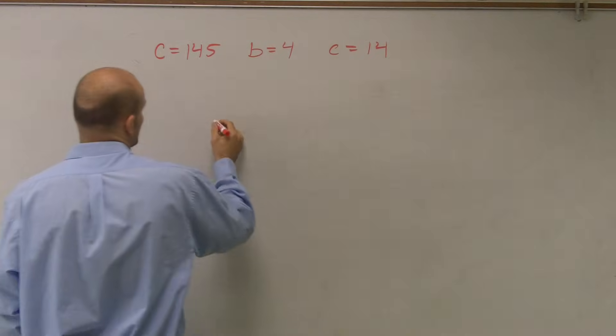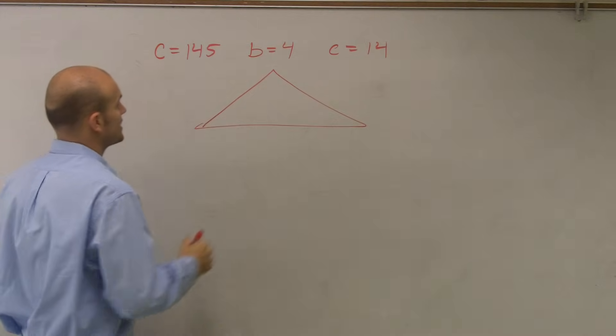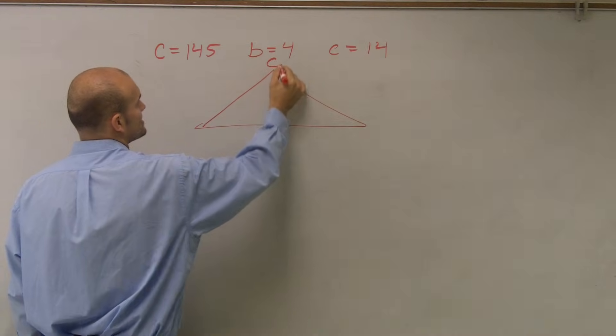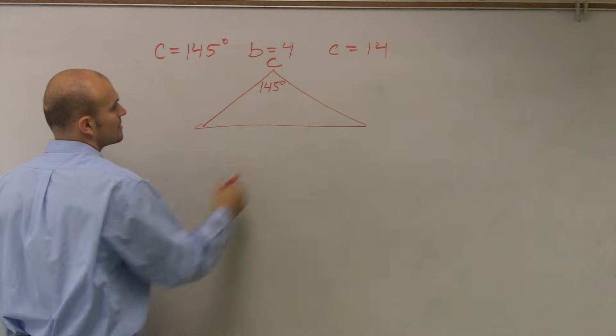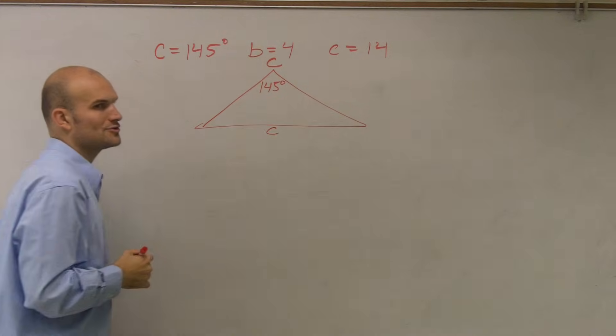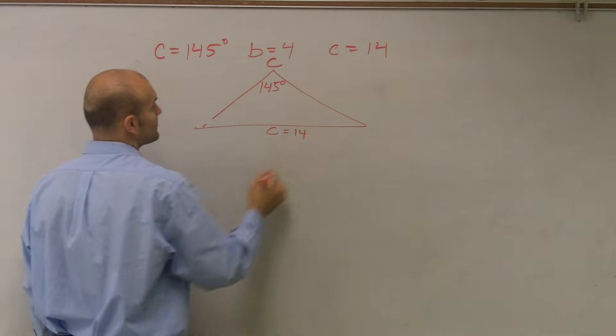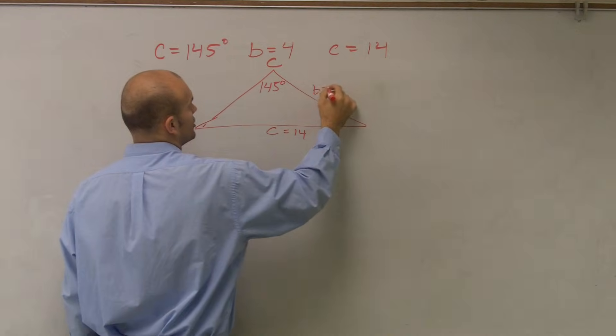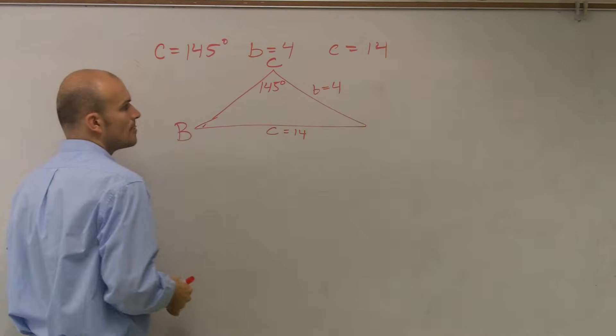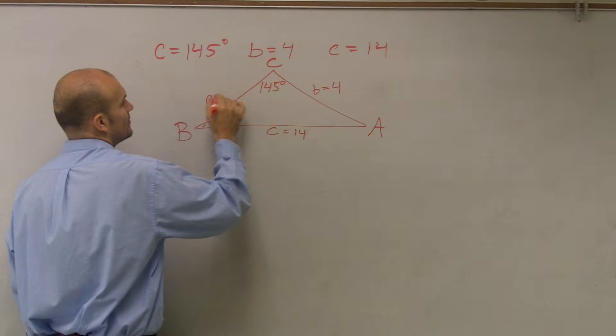So the first thing we're going to do is let's draw a little sketch of what this little triangle is going to look like. So I'll call this angle C, which is 145 degrees. This will be side length c, which is equal to 14. I'll call this B. And this little b is equal to a length of 4. And I'll call this big A. And little a, we do not know.